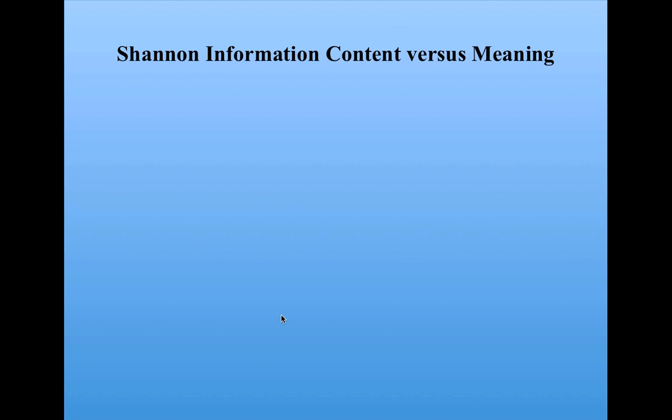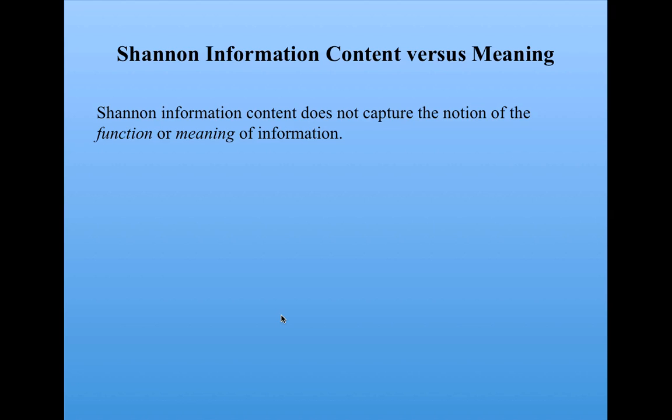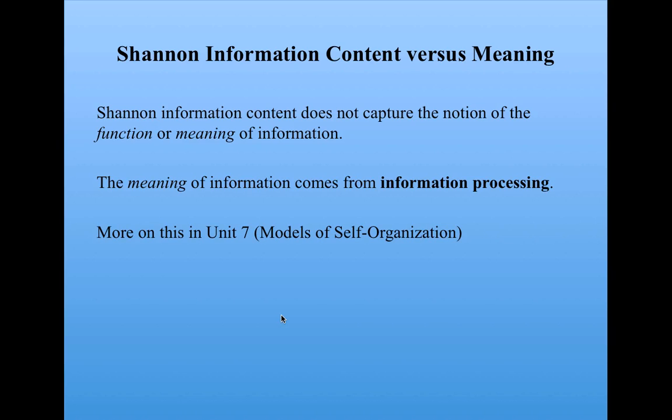Finally, I want to say a few words about the notion of meaning with respect to Shannon information content. You probably noticed that Shannon information content, while it's about probabilities and numbers of messages produced by a message source, it has nothing to say about the meaning of the messages or the meaning of the information, what function it might have for the sender or the receiver. Really, the meaning of information comes from information processing. That is, what the sender or the receiver does upon sending or receiving a message. We're going to talk about this in detail in Unit 7 when we talk about models and self-organization, and how self-organizing systems process information in order to extract meaning.